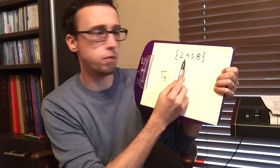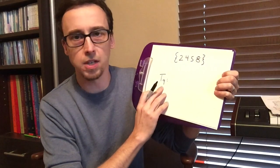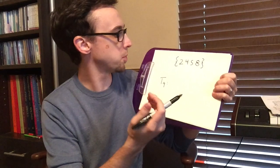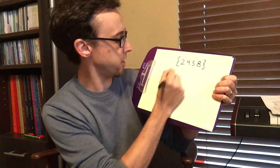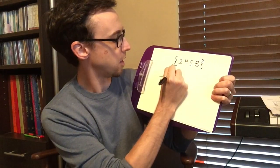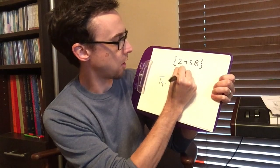So here we have our normal order 2, 4, 5, 8 and we're going to transpose it by nine half steps. So our index number here tells us how many half steps we're transposing this, and to do this we simply add whatever our index number is to each of our integers.